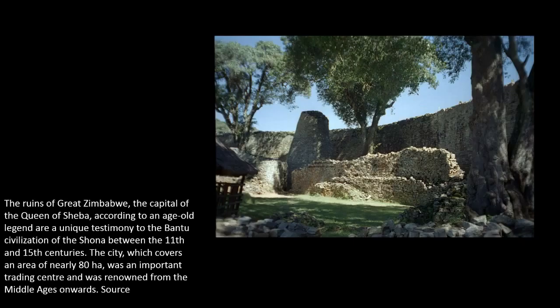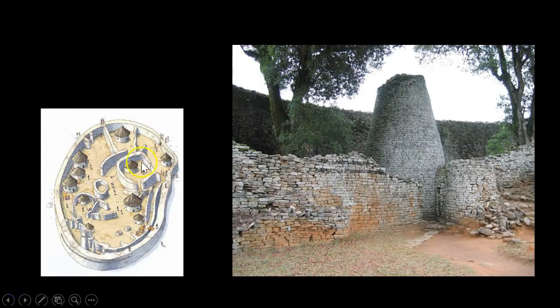The ruins of Great Zimbabwe were the capital of the Queen of Sheba according to age-old legend, and are a unique testimony to the Bantu civilization of the Shona between the 11th and 15th centuries. The city covers an area of nearly 80 hectares and was an important trading center renowned from the Middle Ages onwards. Here is a drawing of how the complex is thought to have been set up, alongside the remnants and ruins, including what is known as the conical tower of Great Zimbabwe.